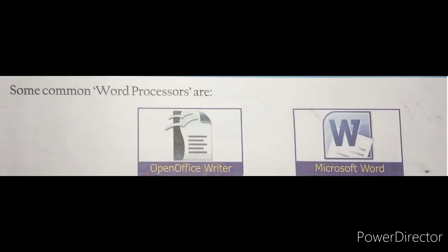Some of the common word processors are OpenOffice Writer and Microsoft Word. In this section, we will learn how to make documents — such as letters, notices, etc. — in the computer with the help of a word processor. Writer is a word processor under the OpenOffice package developed by Sun Microsystem. It can be used on different operating systems like Microsoft Windows, Linux, etc. It is a freeware software, which means it is available free of cost. It can be downloaded from the website www.openoffice.org.